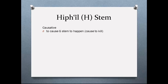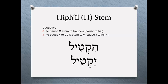The Hiphil tends to be causative — to cause the G stem to happen, to cause to kill, or to cause X to do the G stem. So 'to cause X to kill Y' is another way the H stem can be formulated. The perfect form is hiqtil, and the imperfect is yaqtil. Notice the hirek-yod between the second and third consonants is a common indicator of the H stem. The imperfect of the H stem will tend to have a patah under the performative — compare this to the D stem, which tended to have a sheva under the performative.